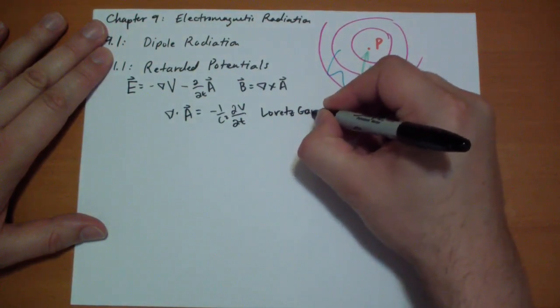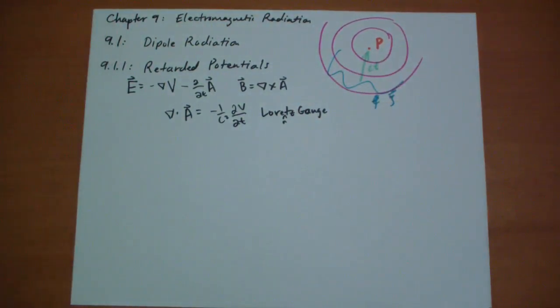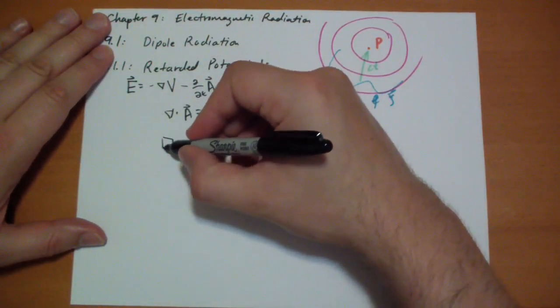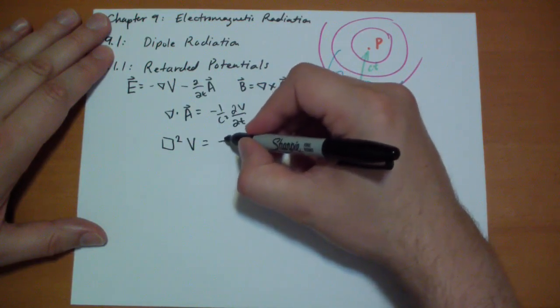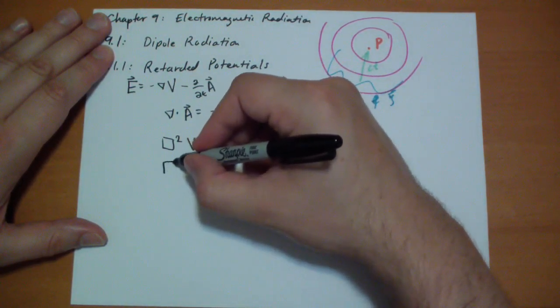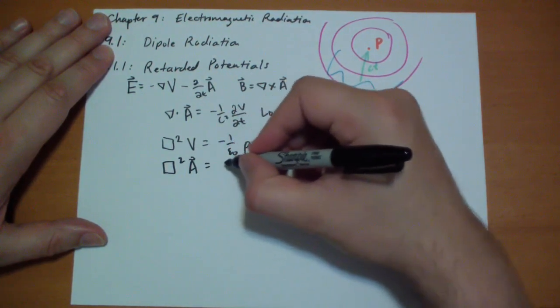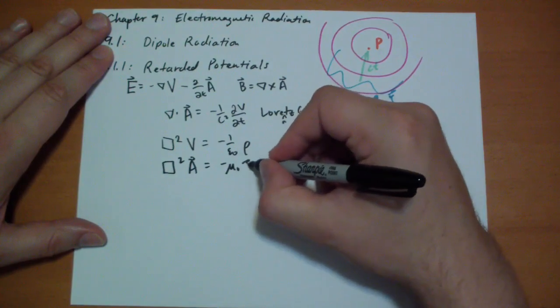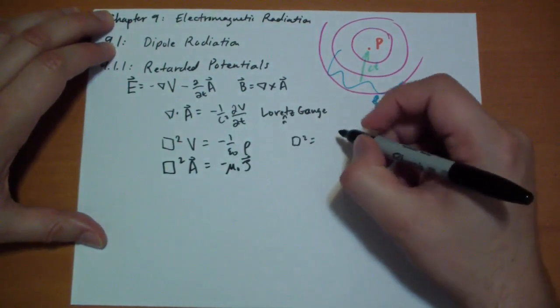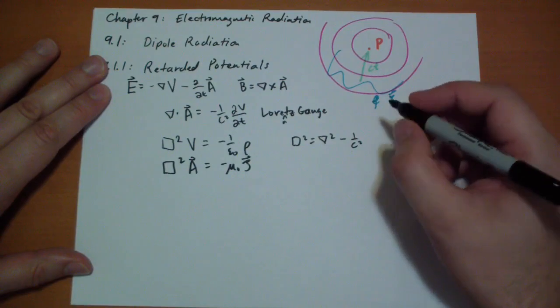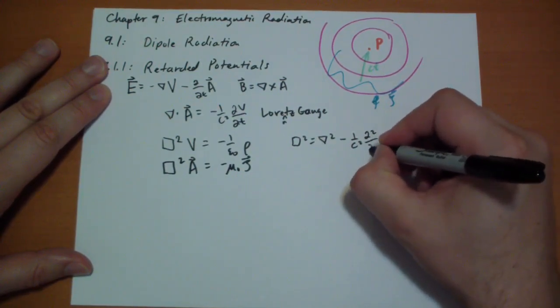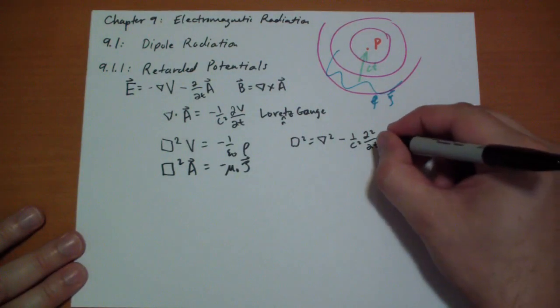With the Lorentz gauge we have the two equations for calculating the V and the A. We have the Dalbertian of V is equal to minus 1 over epsilon-naught rho, and the Dalbertian of the A-vector is equal to minus mu-naught J-vector. Where the Dalbertian is just the operator that takes the Laplacian and subtracts 1 over c-squared times the second time derivative, the acceleration of that field.